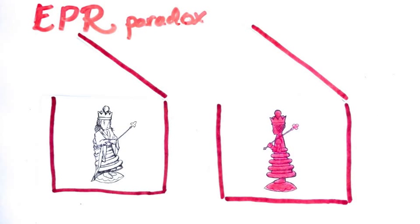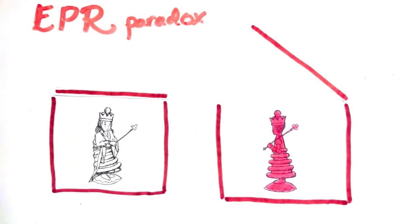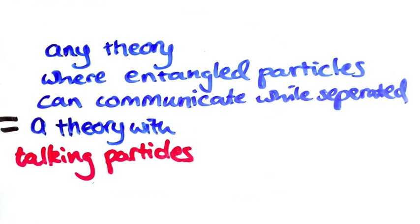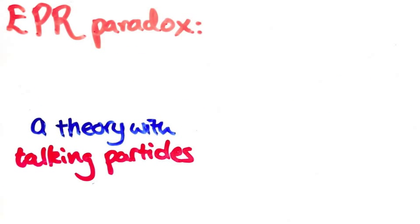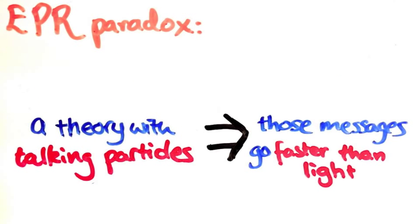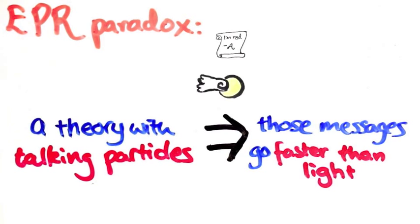The only way is if somehow or other, the particles can talk to each other. We'll call any theory where entangled particles are able to communicate while they're separated like this, a theory with talking particles. The EPR argument showed that if a theory has talking particles, then those messages are going faster than light.